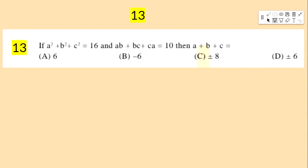Next bit: if a² + b² + c² = 16 and ab + bc + ca = 10, then a + b + c equals — options: 6, −6, ±8, ±6.